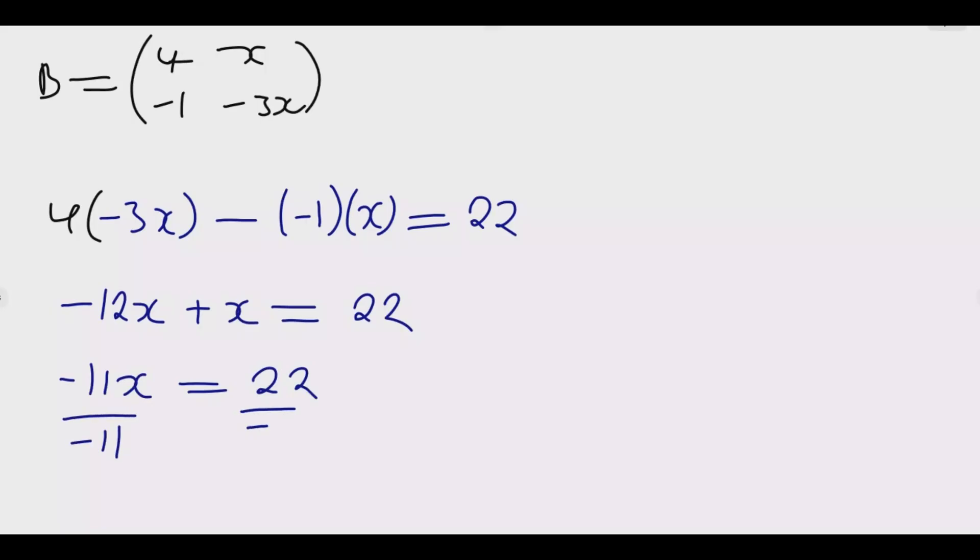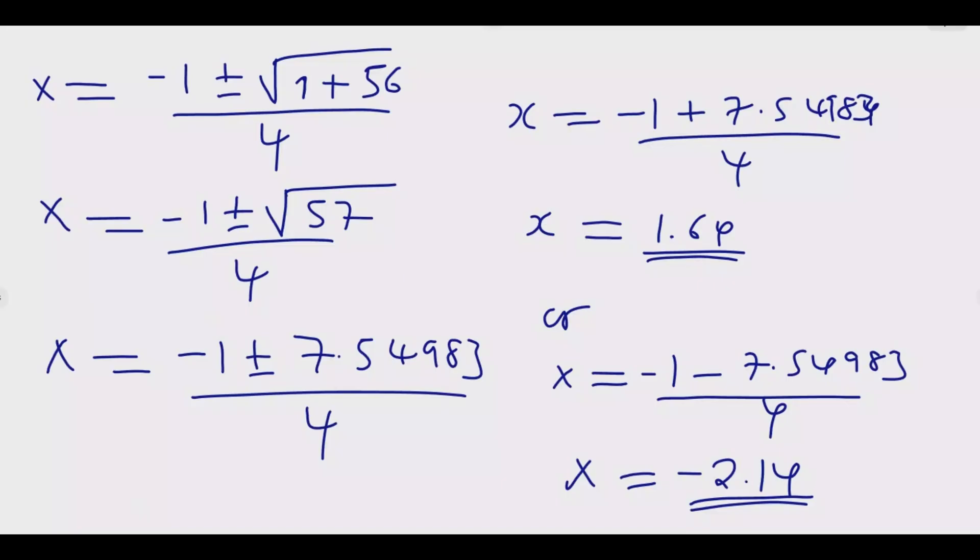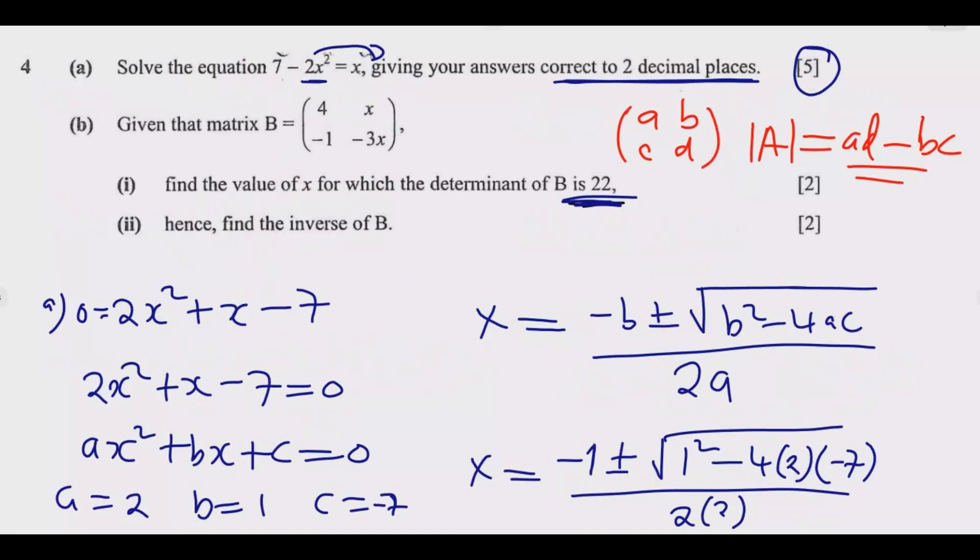Then minus negative 1x is plus x, equals 22. Then we're going to have negative 11x equals 22, then we divide by negative 11. So x is equal to negative 2. So we have answered the value of x. What is key is understanding how to find the determinant. Once you do that, you are good to go. You get these 2 marks.